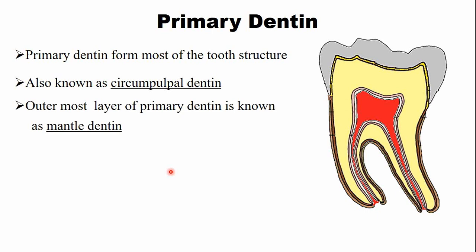Within the primary dentine, the dentine just below the enamel is known as the mantle dentine. In dentine normally collagen type 1 fibers are present, but this mantle dentine — present just below the enamel of the crown — contains more collagen type 3 fibers.